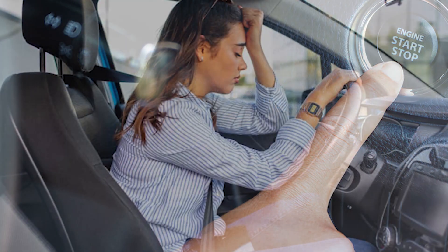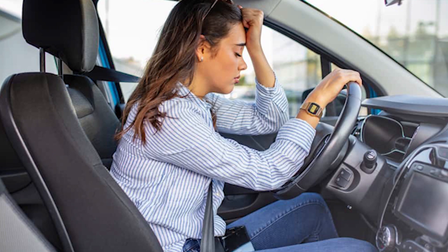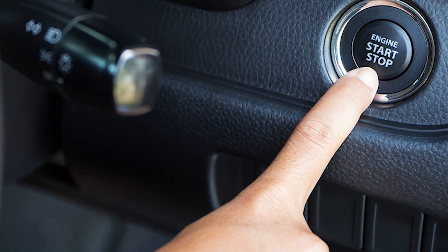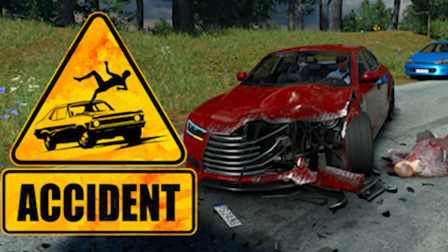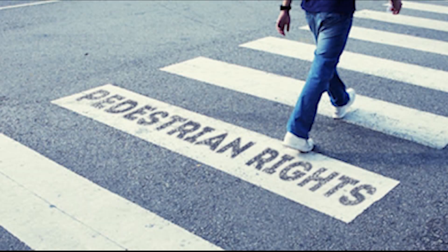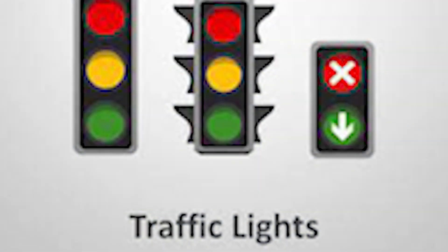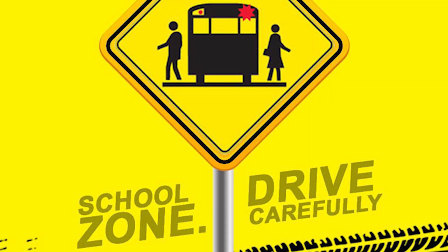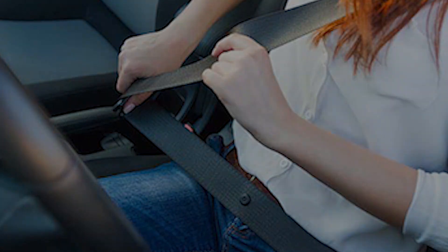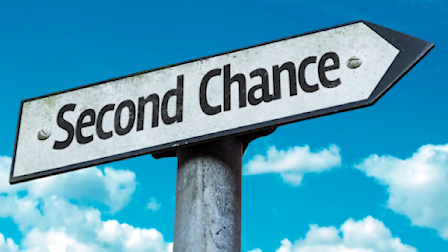The examiner will quit the test if the candidate fails to start the car three times, shows inability in vehicle operation such as engine stalling or stopping over five times, performs sudden braking over five times, causes a potential or actual traffic accident, ignores the examiner's directions in dangerous traffic situations, ignores the safety and rights of pedestrians, violates traffic lights and signs, crosses the center line, drives dangerously near a school or school bus, or is not wearing a seat belt.